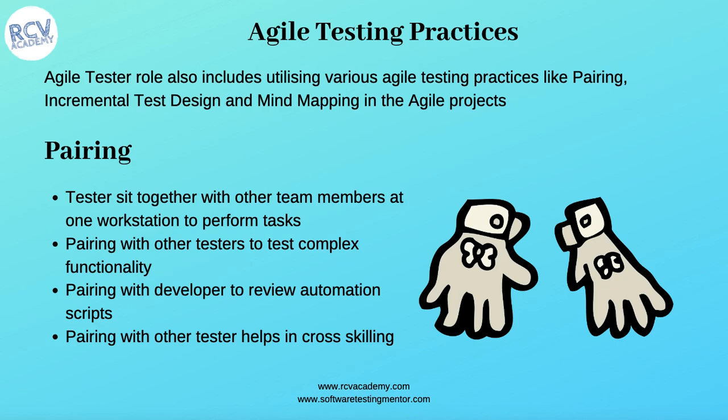As a tester you can sit with the developer to guide what unit tests need to be included or identify any gaps in the unit testing being done. You can also pair with another tester to automate test cases in a particular sprint, or sit with the developer to review automation scripts. You can also sit with other testers to cross-skill across different modules — for example, one tester working on module A and another on module B can sit together to cross-skill and keep everyone on the same page.